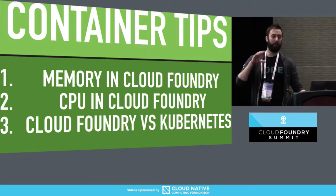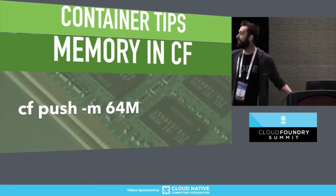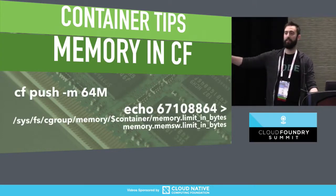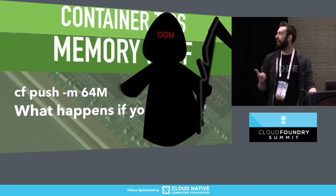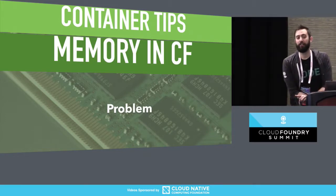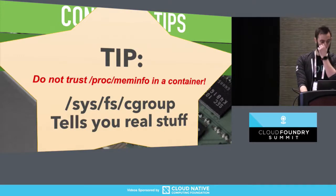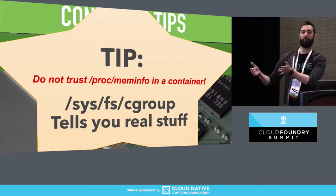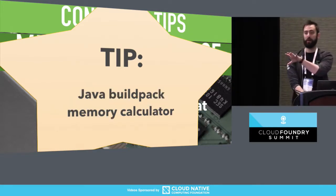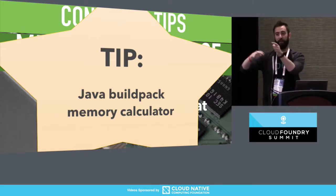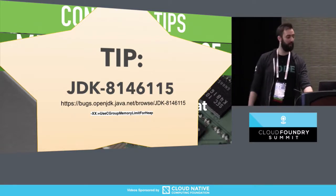I want to give you a few tips about using containers for Java applications in Cloud Foundry. Number one: memory. What happens when you do CF push -m 64 megabytes? It's just echoing that number into the cgroup — that's all that's happening. What happens if you go over? You get killed. The problem is Java doesn't know anything about that. Java thinks it's got all the memory on the host, will try to use it, and it will get killed. First tip for Java: don't look at /proc/meminfo, which is what Java does, because that will lie to you. Look at sysfs/cgroup, because that's real. In Cloud Foundry, there's a Java buildpack memory calculator which will do the math for you. And if you're on recent enough versions of Java, there are flags starting to become available to look at the right place.